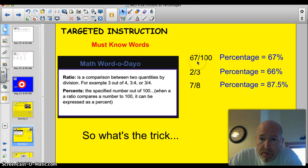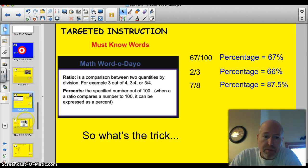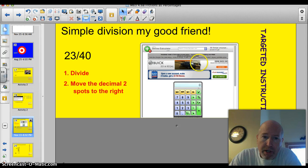Alright, if we have 67 out of 100, that's 67%. That's real easy. It's right out of 100. If we have two-thirds, well, that's kind of a known one. That's 66%. If you have seven-eighths, you may recall from last lesson, that was 87.5%. So what's the trick? How do I get these? Well, it's really just a two-step process. You divide and you end up moving the decimal two places.